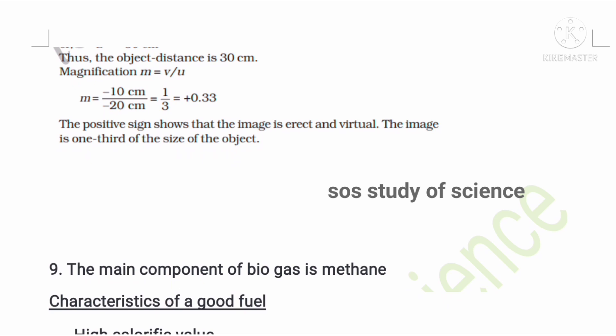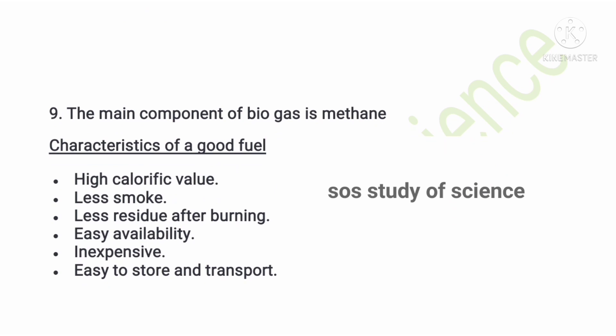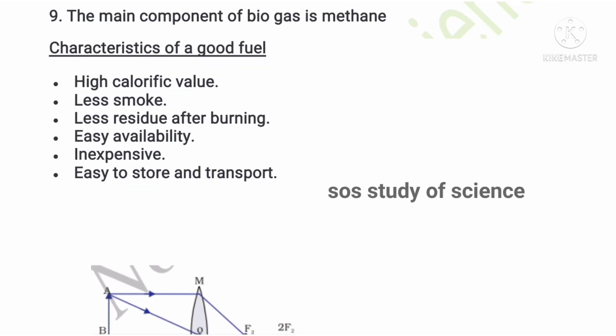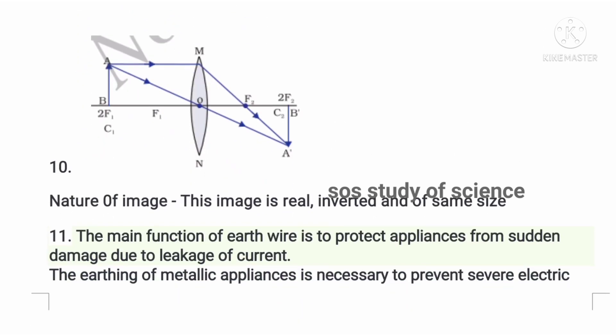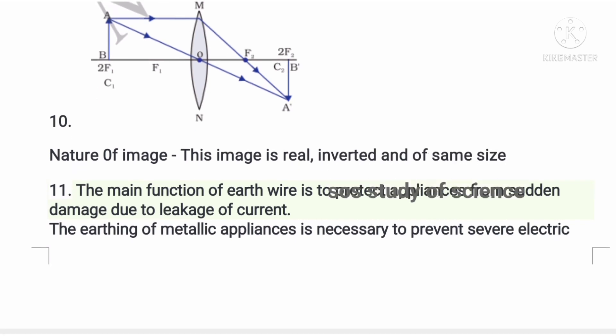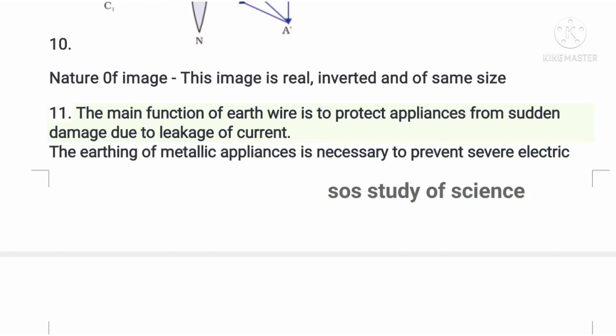Using the object distance of −30 cm, you then find the magnification. This same question appeared in the preparatory exam. The next question asks for the main component of biogas — the answer is methane. They also ask for characteristics of a good fuel: write any four points such as less smoke, easy availability, inexpensive, and easy to store.